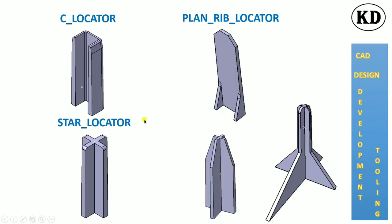First we will see the locator. Here is the C locator. There will be functional dimensions for any features with the origin point, main tooling directions, or orientation lines.